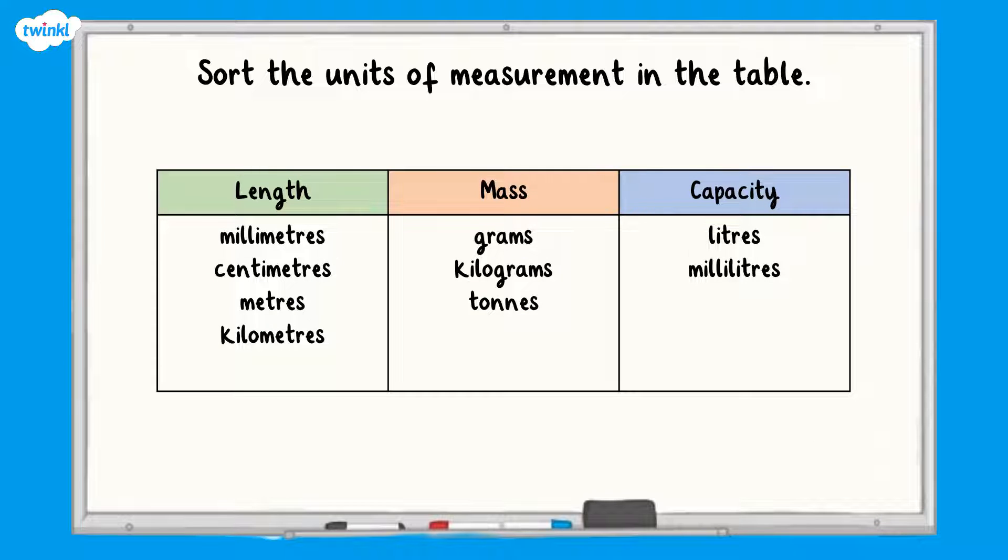That's right, units of length include millimetres, centimetres, metres and kilometres. Units of mass include grams, kilograms and tonnes and units of capacity include millilitres and litres.